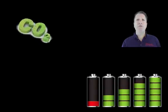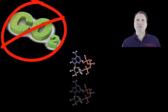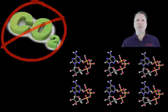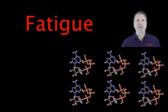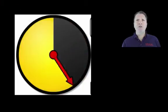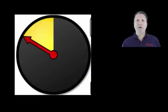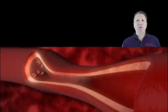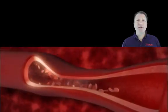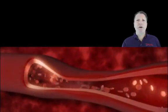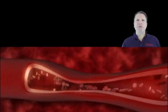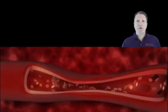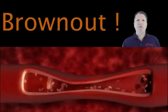Every CO2 your body doesn't make is 6 units of energy that you have to do without, as fatigue. The more your body does without the energy it needs, the sooner you're going to have problems. So if you're low on CO2 or energy, brownouts from vascular inflammation are the first thing you want to get rid of.